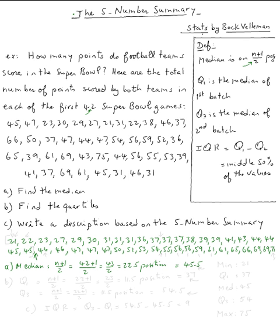For part B, find the quartiles Q1 and Q3. Q3 is the upper quartile, Q1 is the lower quartile, and Q2 is actually just the median.